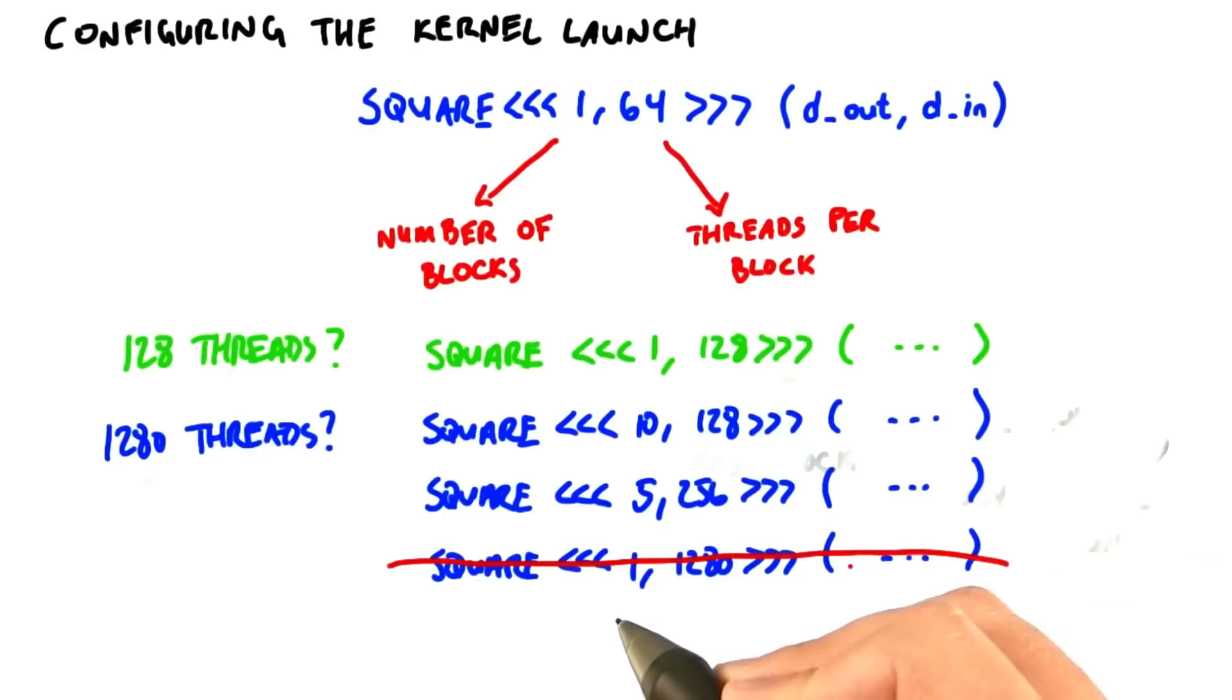But we can't call square of 1,1280 because that's too many threads per block. You should pick the breakdown of threads and blocks that makes the most sense for your problem.